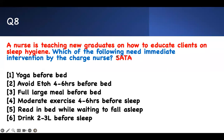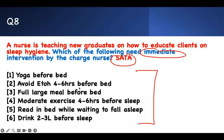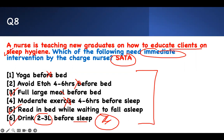Question 8 — need immediate intervention: teaching a new graduate on sleep hygiene. Yoga before bed — no intervention needed, that's good. Avoid alcohol 4 to 8 hours before bed — no intervention needed. Full large meal before bed — intervention needed, you should not do that. Moderate exercise 4 hours before — good. Read in bed while waiting to fall asleep — intervention needed, you won't sleep. Drink 2 to 3 liters before sleep — intervention needed, bladder will be full. Answers 3, 5, and 6 are wrong and need intervention.